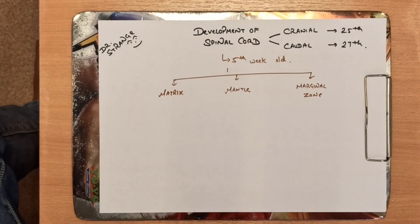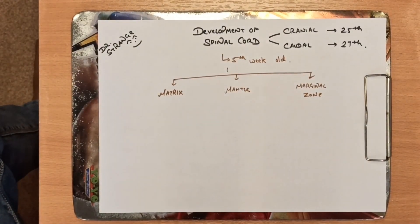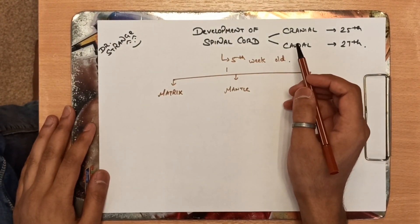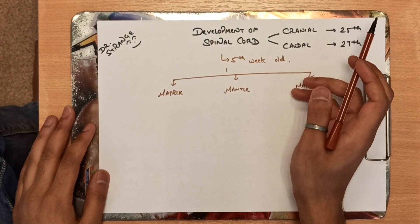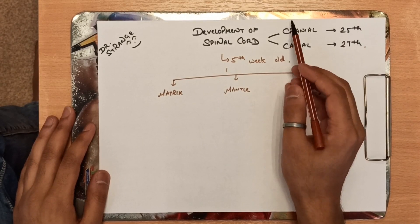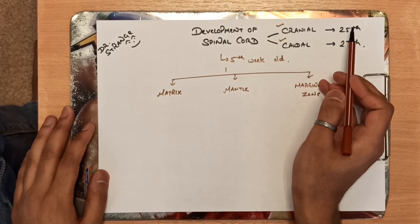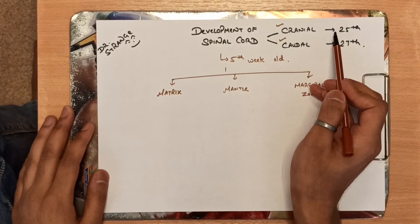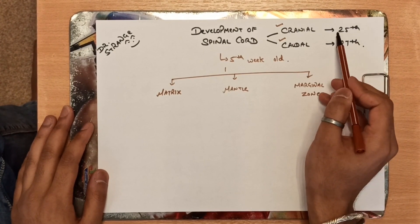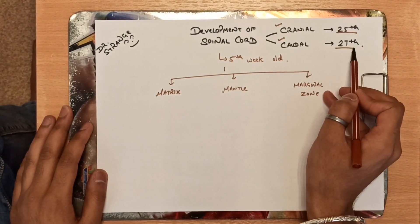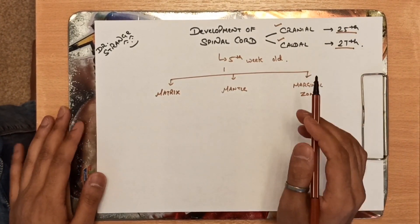Hello guys, welcome back. Today in this video I'll be telling you all about development of the spinal cord. As in my previous videos I've already explained, there are two neuropores in the neural tube — the cranial one and the caudal one. The cranial one closes after the 25th day and the caudal closes at the 27th day.